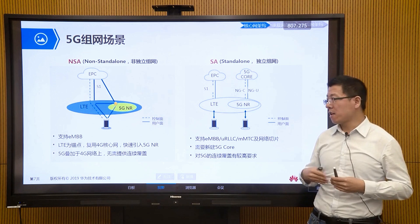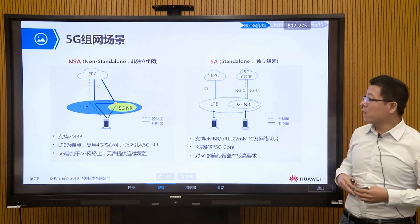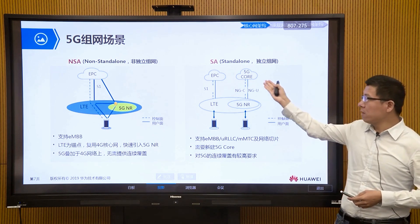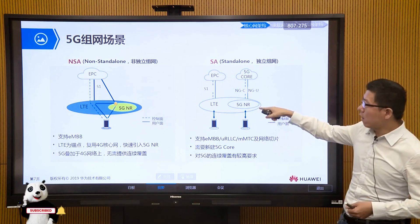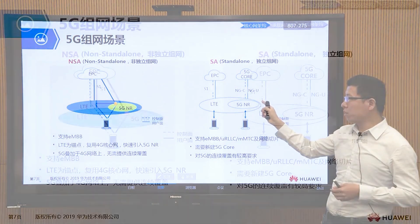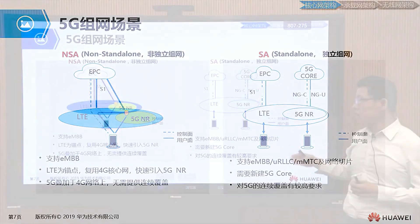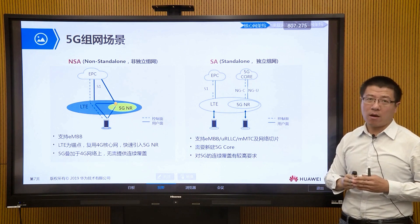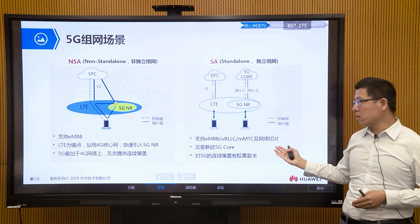The other networking method is standalone networking, or SA. In the SA scenario, 4G and 5G can be decoupled. The 5G base station connects through the NG interface to the 5G core network. In this scenario, we need a new core network called 5G Core, or NGC — next generation core. Our 5G base station and 5G core network are interconnected through the NG interface. We can see dashed lines for control plane signaling and solid lines for user plane data connected to our 5G terminal. SA supports all application scenarios and supports network slicing, enabling vertical industries. However, the disadvantage is that we need to build a new 5G core network and achieve continuous 5G coverage, requiring more site builds and higher initial investment.